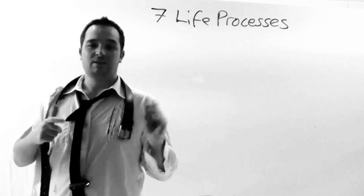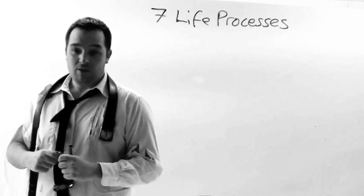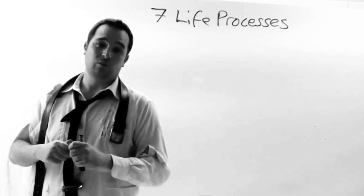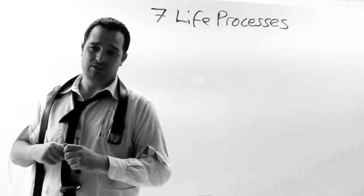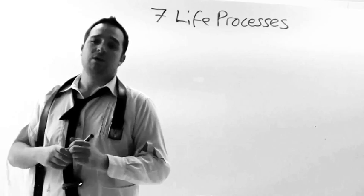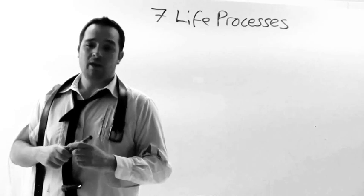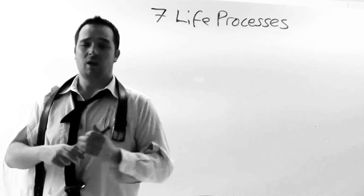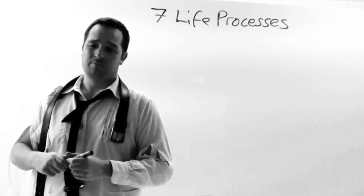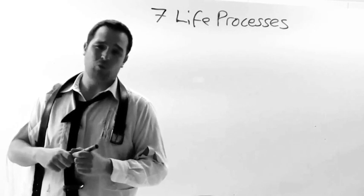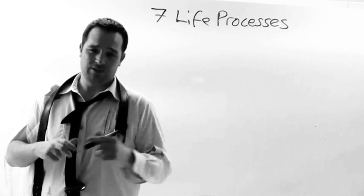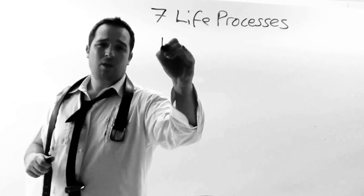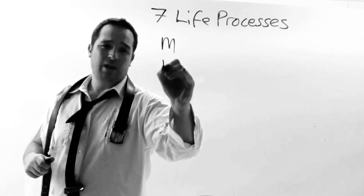There are seven things that all living organisms do. These are called life processes. An organism is only alive if it does all seven life processes. To remember all seven life processes, we use the name Mrs. Gren.